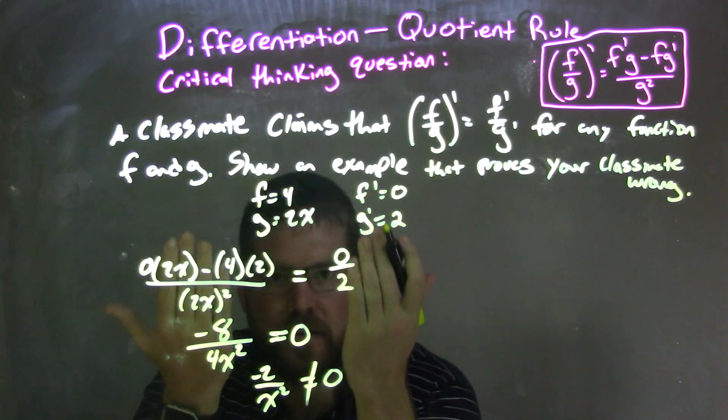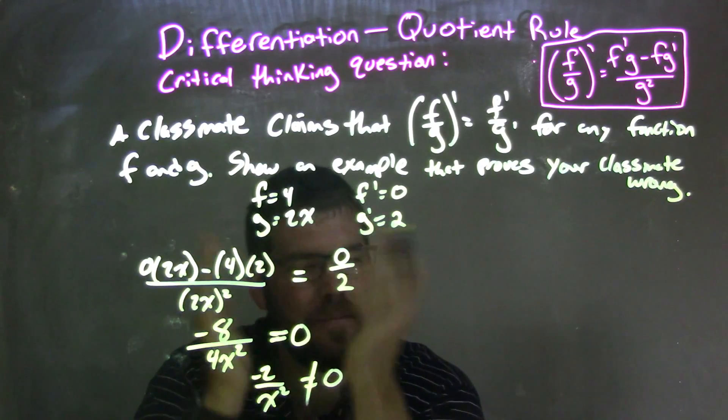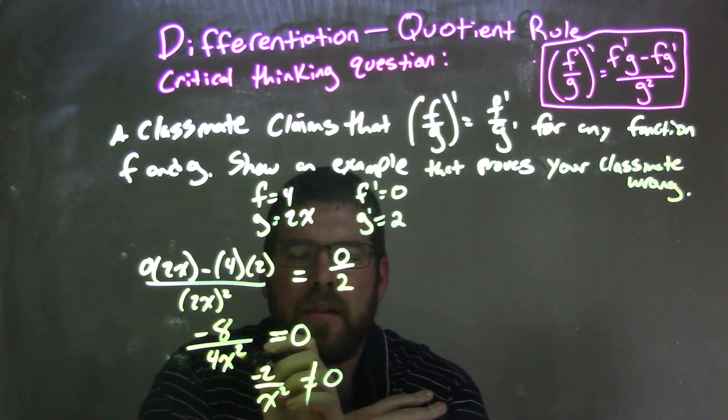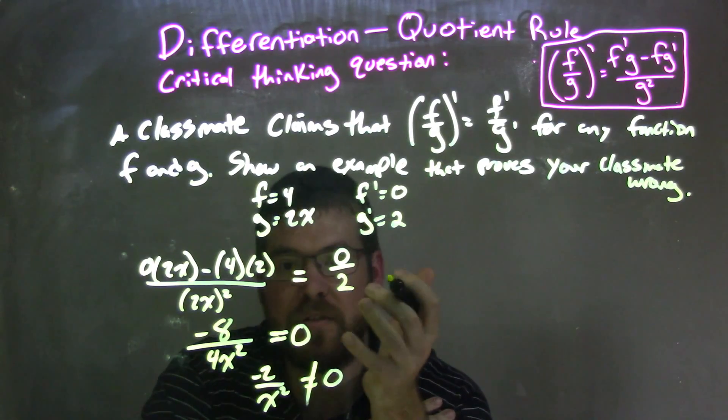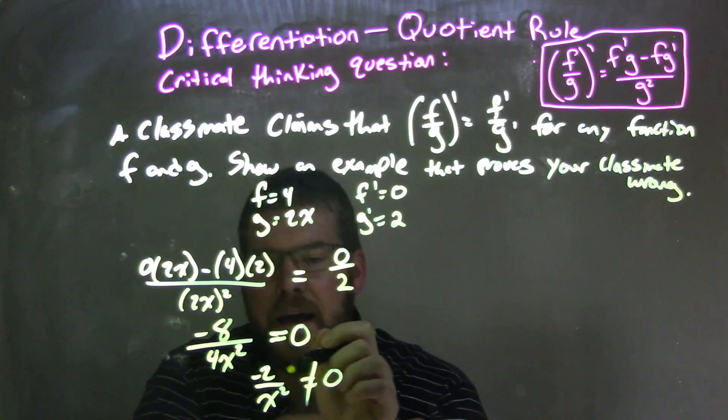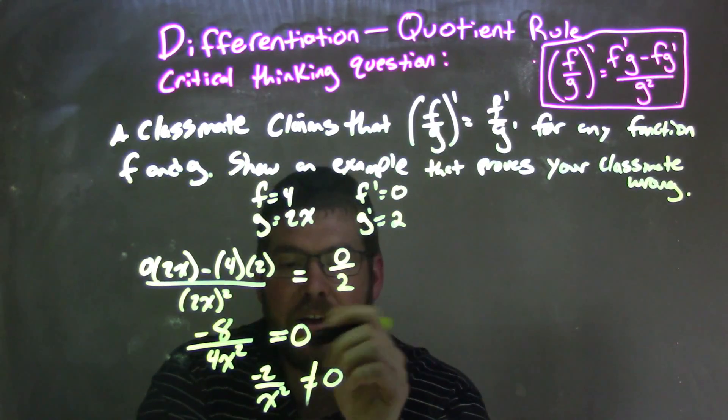And then I want to see are these the same. If they're not the same, classmate is wrong. Simplify. I have a numerator, I got negative 8, denominator 4x squared on the left, and the right-hand side is 0 over 2 is 0. If I wanted to simplify it more, I could. I don't really have to. But I have a negative 2 over x squared, it's not equal to 0. But they're not equal, right? They're not equal to each other.